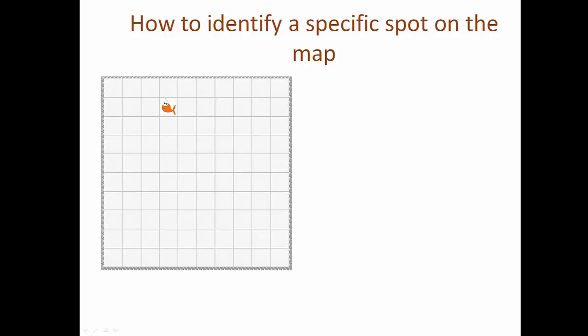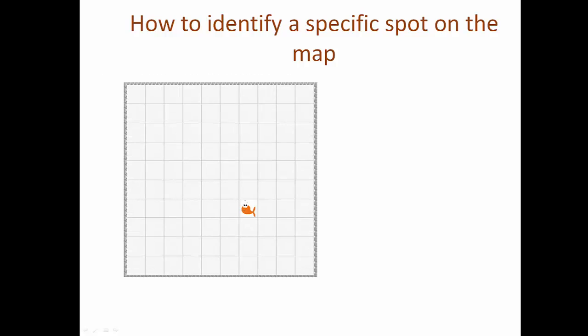In Penji, we consider each square on our grid a specific location that we can reference using a system of rows and columns. So for example, the square where the fish is located on this map would be in row 1, column 3, and the square of this fish would be in row 6, column 6.